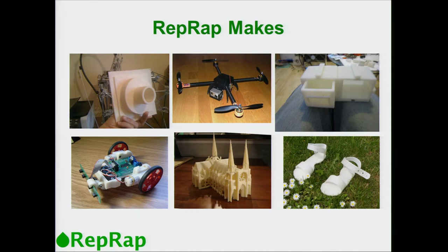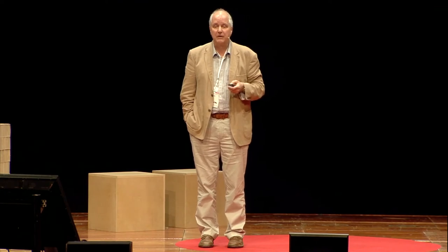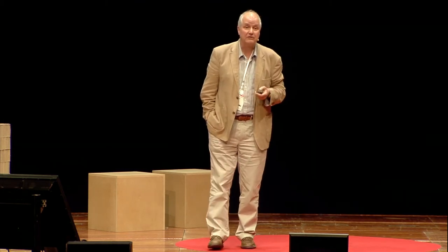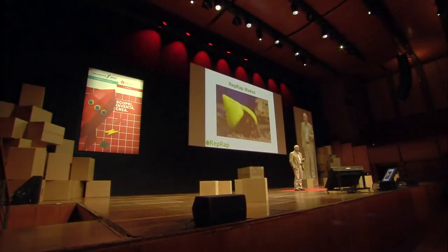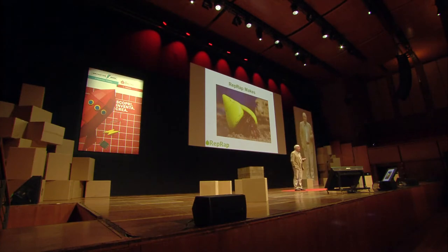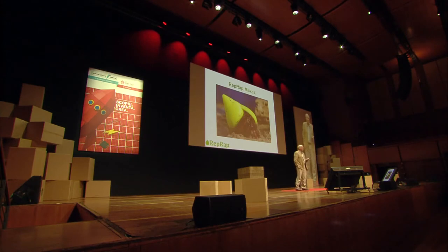What does RepRap make? You've all seen outputs of 3D printers — there's a quadcopter, children's shoes, and so on. People often ask me — journalists particularly — what my favorite ever object made by a RepRap printer is, and this is the answer. RepRap has solved the housing shortage, just not for people, unfortunately. This is a 3D printed shell which has been taken up by a hermit crab. When I started the RepRap project, I had no idea that people were going to make homes for hermit crabs using it.